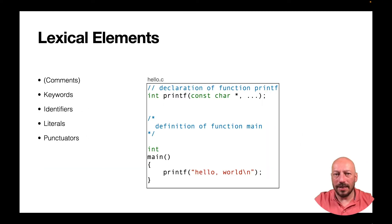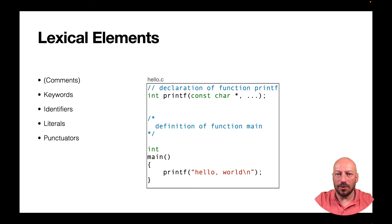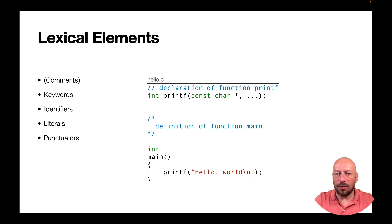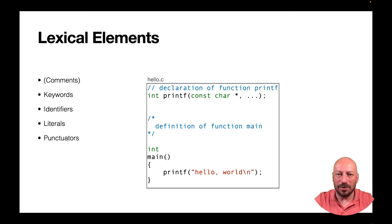First, the single characters of your program are grouped into tokens — you know this concept from the introduction to the Unix shell. Now in C, you have different kinds of tokens. For example, the so-called keywords are tokens that cannot be used for your variable names and function names.